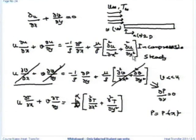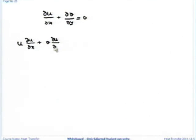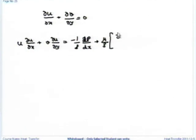What does my x-momentum equation reduce to? For flow over a flat plate, what happens to dp by dx? Let me write the continuity equation: del u by del x plus del v by del y equal to 0, and the x-momentum equation: u del u by del x plus v del u by del y equal to minus 1 by rho dp by dx plus mu by rho del squared u by del x squared plus del squared u by del y squared.